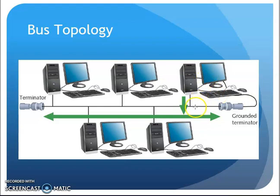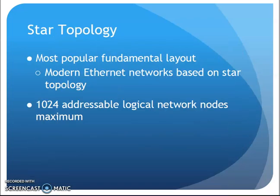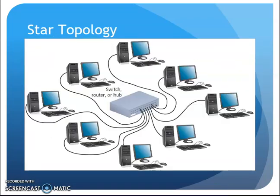Functionally, the hub worked the same as the bus topology — when a computer sent data it went to everybody. With a hub in the star topology, data from one computer went into the hub and the hub repeated to everybody. So data-wise it functioned the same way as the bus, but you did have the advantage of link lights and individual connections to every computer — which was a big step forward for managing the network.